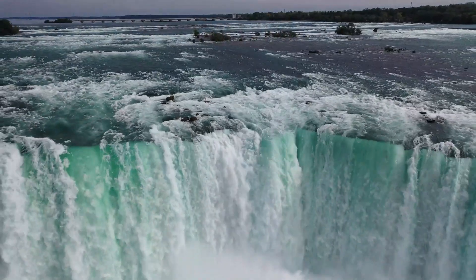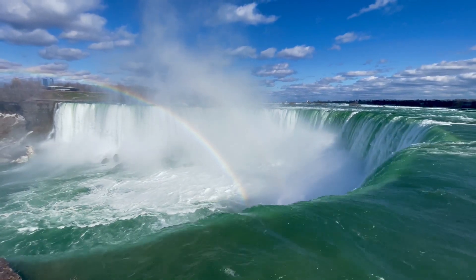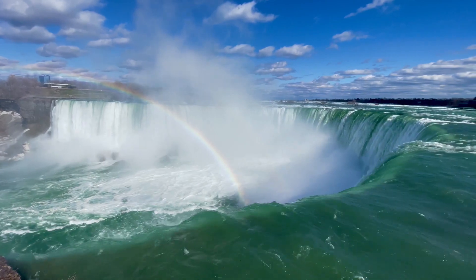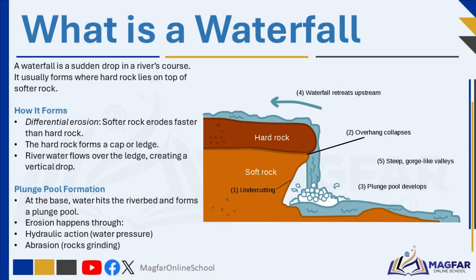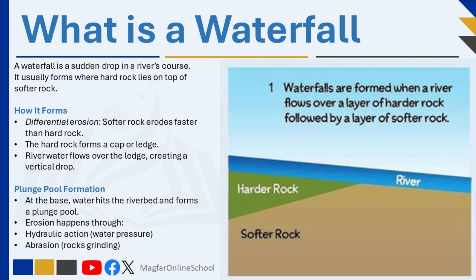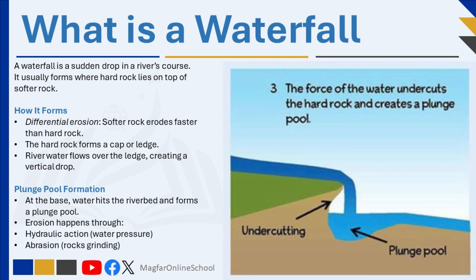A waterfall is one of the most dramatic features found along a river. It forms where there is a sudden drop in the riverbed, usually because a layer of hard rock lies on top of a softer rock layer. This happens through a process called differential erosion, where the river wears away softer rock more quickly than harder rock. Typically, the harder rock is resistant igneous rock, while the softer rock is usually sedimentary. Because the hard rock erodes more slowly, it forms a cap or ledge over the softer rock, creating a step in the riverbed. As the river flows over this step, the softer rock beneath continues to erode quickly, deepening the drop — leading to the formation of a vertical drop, and the river water plunges over it, creating a waterfall.